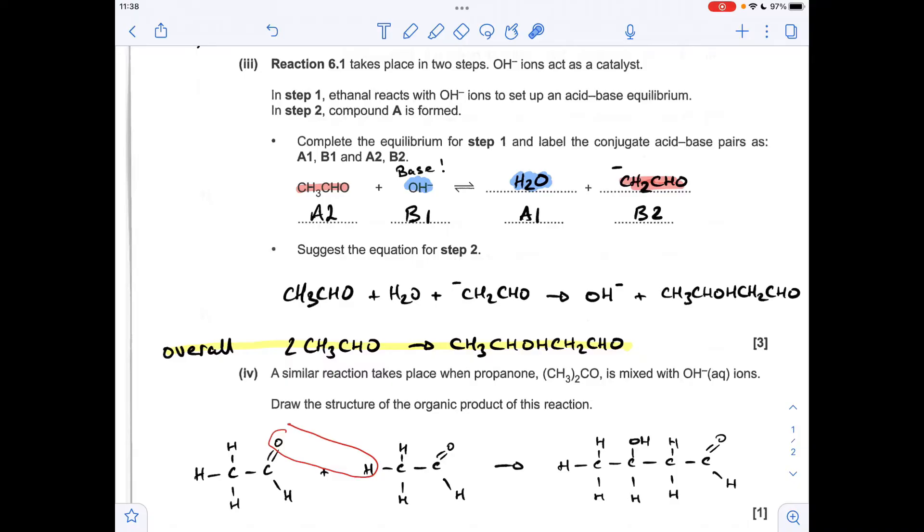And I'm just going to apply that to the propanone scenario. So literally all I've done there is change the hydrogen to a CH3 group, and obviously both of the reactants. So here we've now got a CH3 group, likewise here.